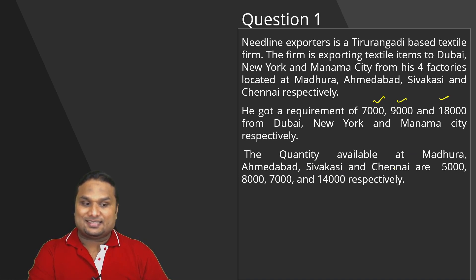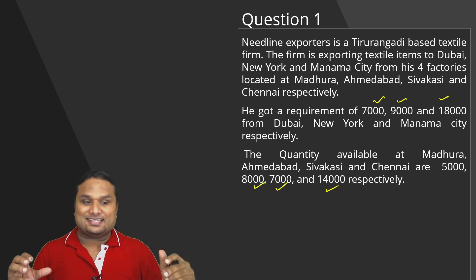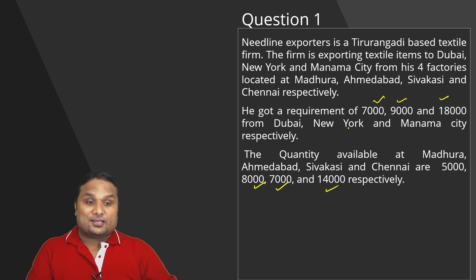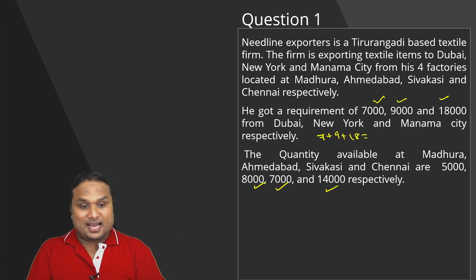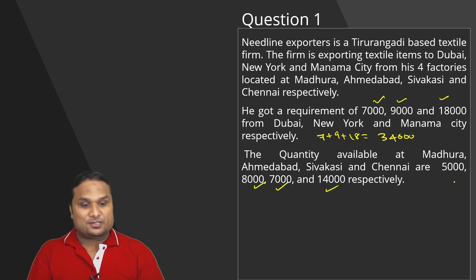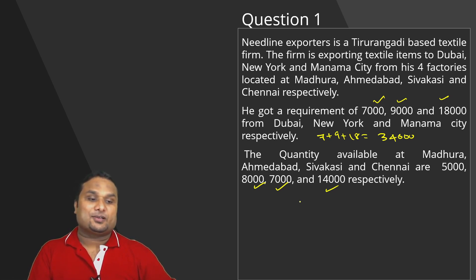The quantity available at Madura, Ahmedabad, Shivagashi, and Chennai are 5,000 units, 8,000 units, 7,000 units, and 14,000 units respectively. Adding the demand: 7,000 plus 9,000 plus 18,000 gives a total demand of 34,000. Adding the supply: 5,000 plus 8,000 plus 7,000 plus 14,000 also gives 34,000. So the total demand equals total supply at 34,000.